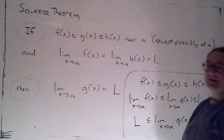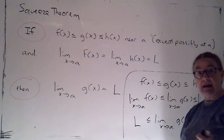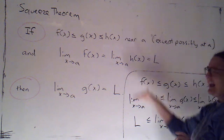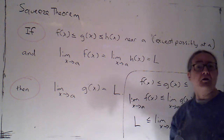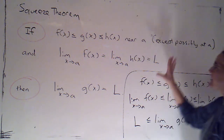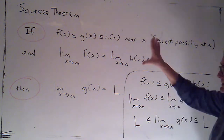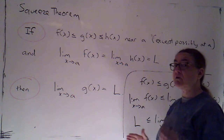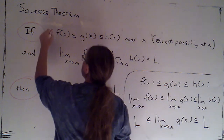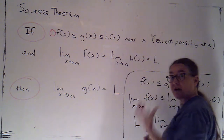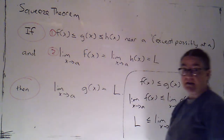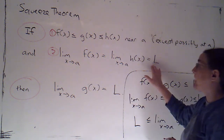I want to use the squeeze theorem in an example to evaluate a limit and see why we might need this theorem. There are some times when we do need to explicitly rely on it. Remember, the way we use an if-then is we have to show that the hypotheses are satisfied, and there are two hypotheses. I'm going to have to show that there's this relationship — establish an inequality — and then show that the smallest function and the biggest function have the same finite limit.